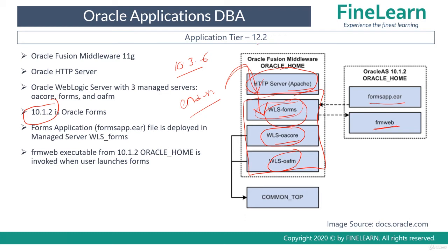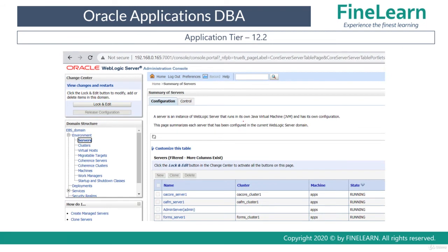The key components of the 12.2 application tier are: Fusion Middleware 11g with a domain called the EBS domain, which has the admin server and three managed servers, and the 1012 Oracle Home which is the product home for Oracle Forms and Reports. The WebLogic domain also runs within Fusion Middleware 11g.